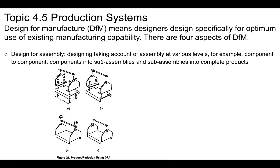Design for assembly — this is designing taking into account the assembly at various levels: for example, components to components, components to sub-assemblies, and sub-assemblies to completed product. This is an example of how you might redesign something so that there is less and less assembly required. This might be your first idea of how to assemble a product, but then you might redesign it so that there are fewer steps.